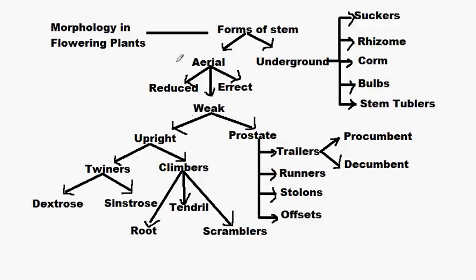We will start with the aerial stem. As you all know, aerial stem is the stem which grows above the ground, different from underground stem which is present below the ground. The aerial stem can be classified into three types: reduced, weak, and erect. Let us understand these three terms first.